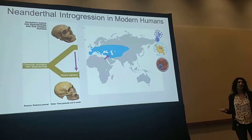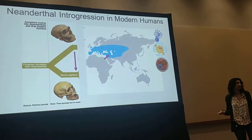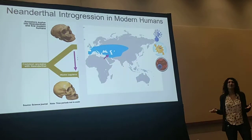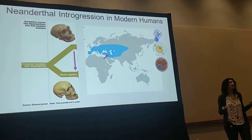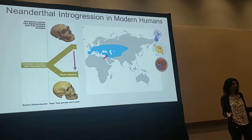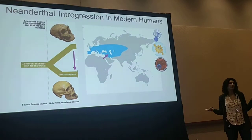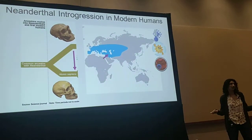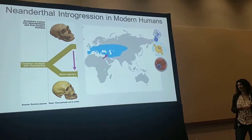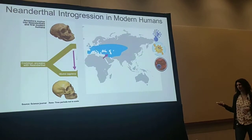We've identified alleles that have adaptively introgressed from Neanderthals into modern humans, and that's because they're at unusually high frequency in present-day modern human populations. Whereas in the rest of the genome, if you observe a Neanderthal allele that's segregating in the human population, it'll be at just a few percent frequency.